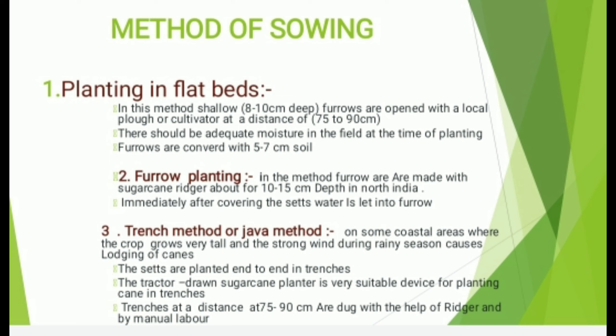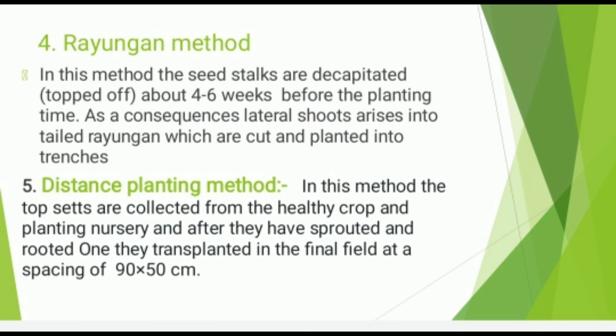French and Java Method: In some coastal areas where crops grow very tall, strong winds during the rainy season cause lodging in cane. The French method is adopted to save the crop from lodging. The sets are planted end to end in trenches. A tractor-drawn sugarcane planter is a very suitable device for planting cane in trenches. Trenches at a distance of 75 to 90 cm are dug with the help of a rigger and manual labor. Rhygon Method: Seed stalks are pre-sprouted about 4 to 6 weeks before planting time, after which the shoots arise into rhygons, which are cut and planted into trenches.